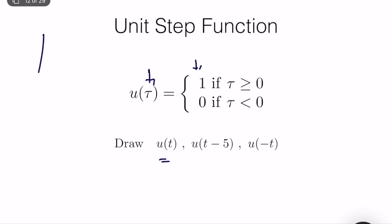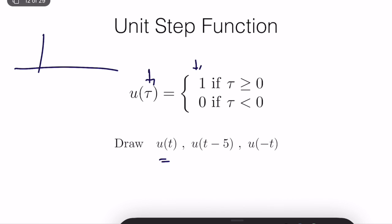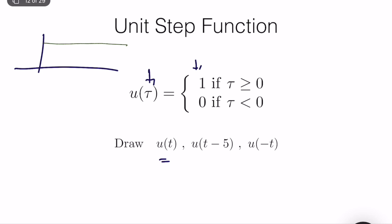What is u(t)? When t is greater than 0, it is 1. When t is less than 0, it is 0. If we draw it, for t greater than 0 we get value 1, and for t less than 0 we get 0. This is u(t), equal to 1.